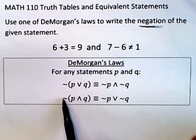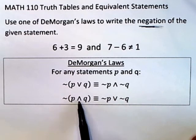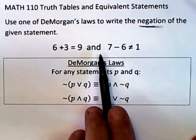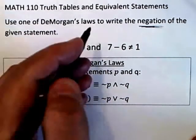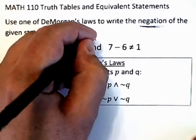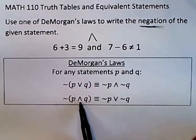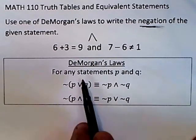And to negate an AND you negate the P, you negate the Q and you flip the AND into an OR. Now this is an AND statement so you're going to be using this one. You're going to negate the AND.